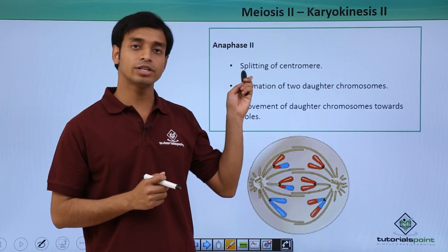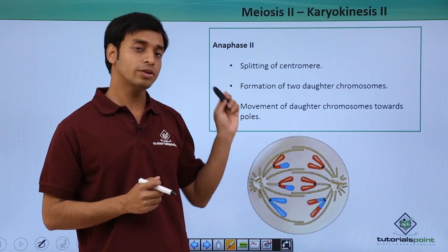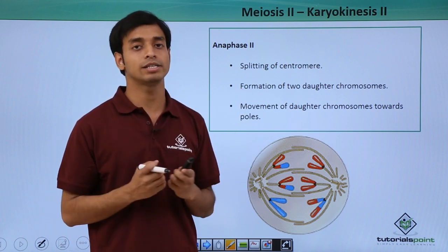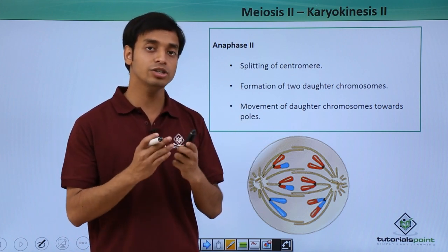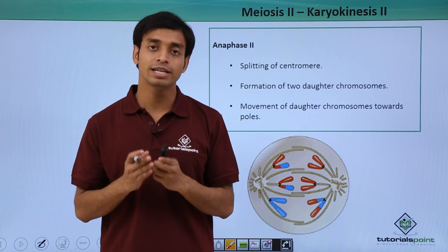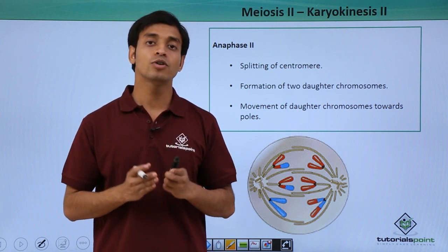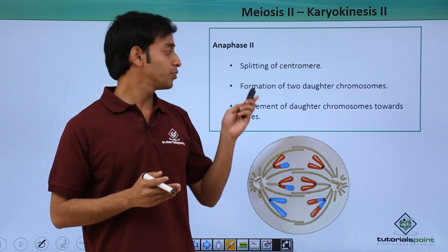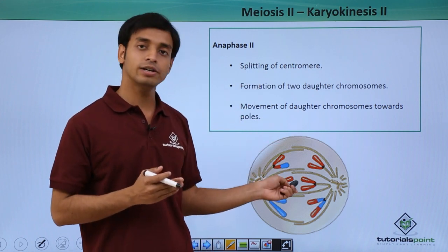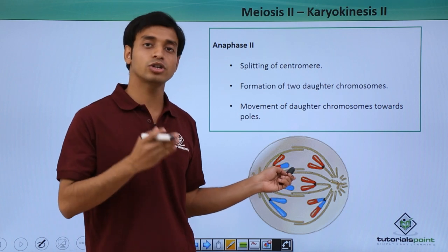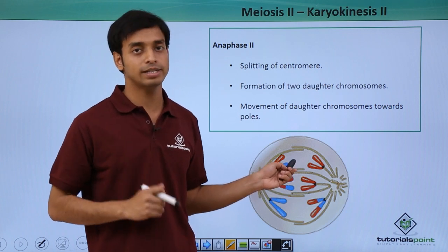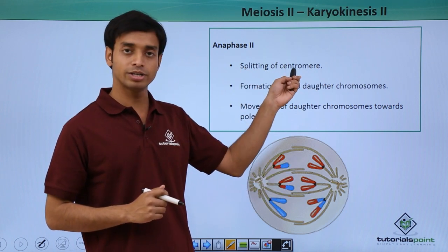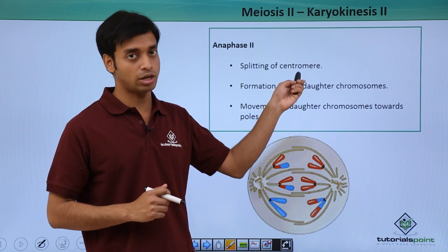The third phase is Anaphase 2. Here, the separation of the sister chromatids is going to happen. In Meiosis 1 we saw the separation of homologous chromosomes, but the difference here is that in Anaphase 2 the separation of sister chromatids takes place. This involves the splitting of the centromeres.